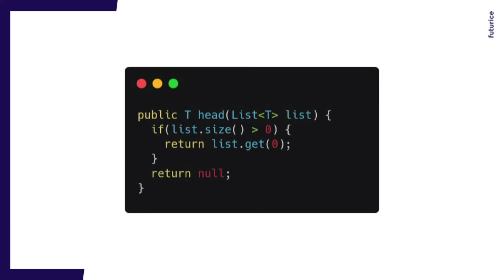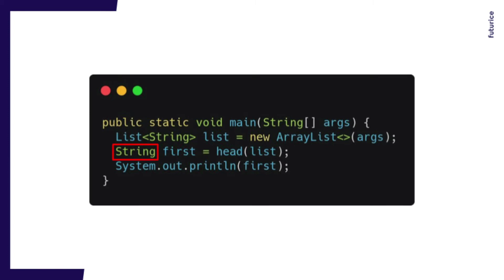I absolutely don't like exceptions — I think exceptions should be used only if the failure is not recoverable, to crash your program. So let's get rid of the IndexOutOfBoundsException and do something like this: check the size first, then return null if the list is empty. I'm omitting the try-catch block for simplicity. Other languages like JavaScript or TypeScript wouldn't require a try-catch here because they don't have checked exceptions.